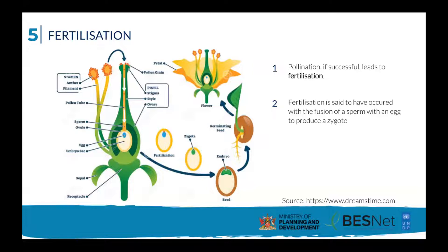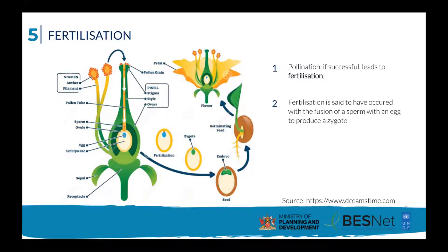Inside the anthers or microsporangia, the male gametophytes divide by meiosis to generate haploid microspores, which in turn undergo mitosis and give rise to pollen grains. Each pollen grain contains two cells: one generator cell that will divide into two sperm, and a second cell that will become the pollen tube cell. On the other side, the ovule is the megasporangium in which megaspores are formed. Three are aborted, and the survivor forms the female gametophyte in which the egg cell is produced. Note that the anthers and carpels are structures that shelter the actual gametophytes — the pollen grain and the embryo sac.